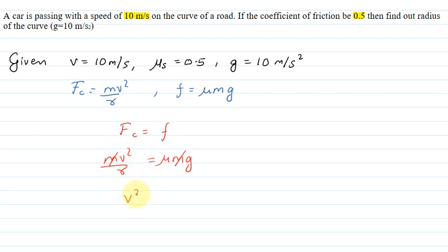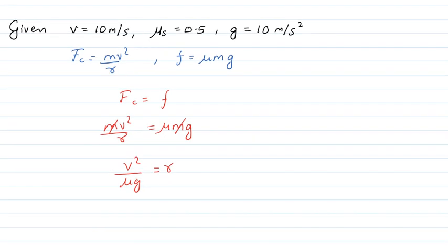So mv² divided by μg equals r. Now we can see the values are available: v is 10, μ is 0.5, and g is 10. Substituting these values into the equation.